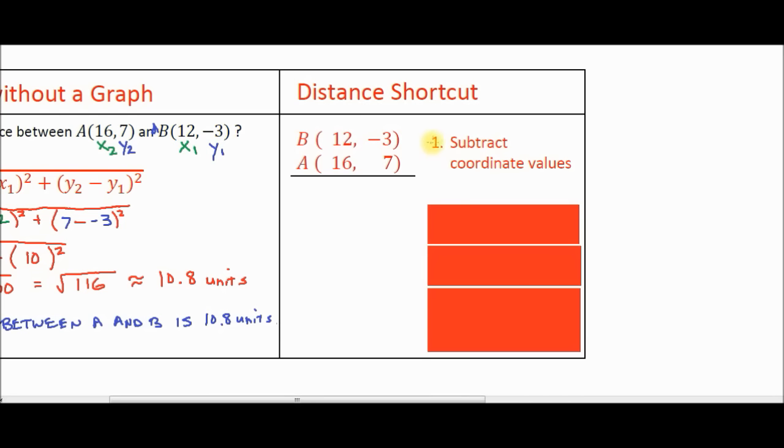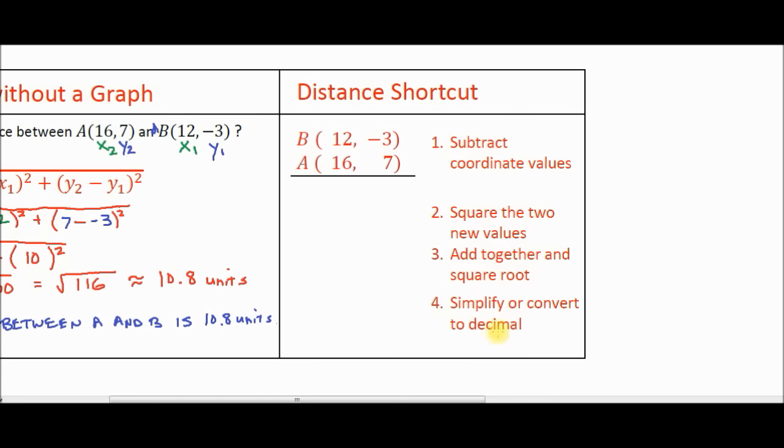So step number one, what you're going to do is, you're going to subtract the coordinate values. I'll show you how to do that in a moment. Step number two, you're going to square the two new values. Step one is going to give you two numbers. You're going to square those two numbers. Step number three, you're going to add those two numbers together, and then put a square root over it.